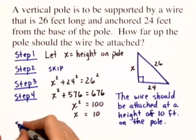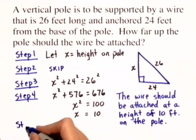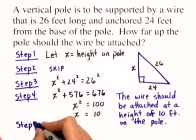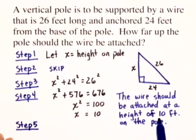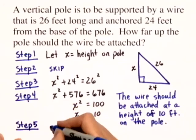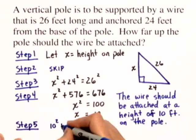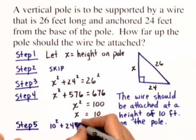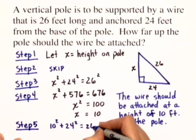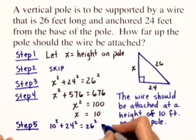So we're going to step 5 and in step 5 we can check our answer by substituting 10 in for X. We can see that 10 squared plus 24 squared is equal to 26 squared, and this checks.